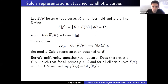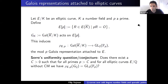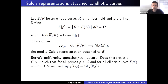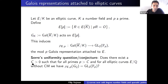One of the most important open conjectures in this field is Serre's uniformity question or conjecture, originally stated as a question by Serre and since formally conjectured by both Zywina and Sutherland independently. The question asks: does there exist a constant C such that for all primes p larger than C, and for all curves defined over Q without CM, the mod-p Galois representation is surjective? The conjecture is that the answer is yes, and that C might be 37.